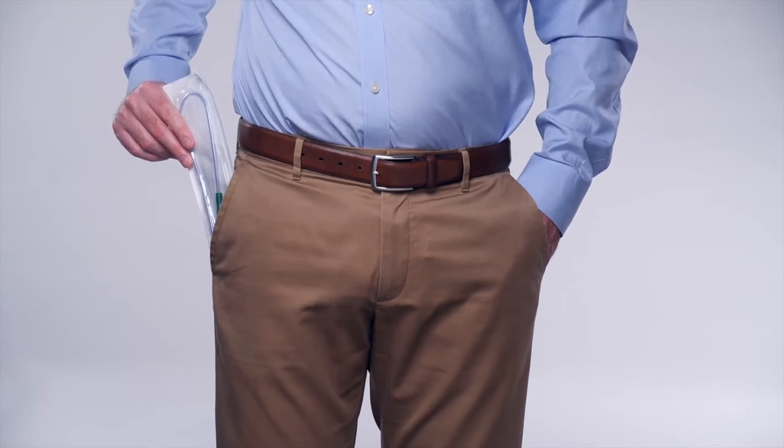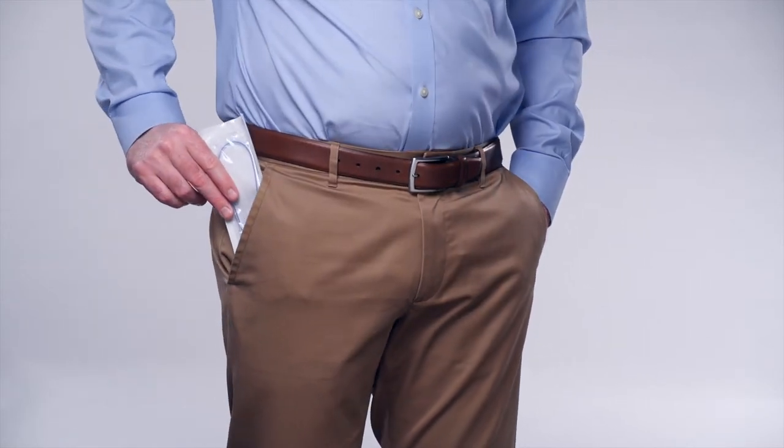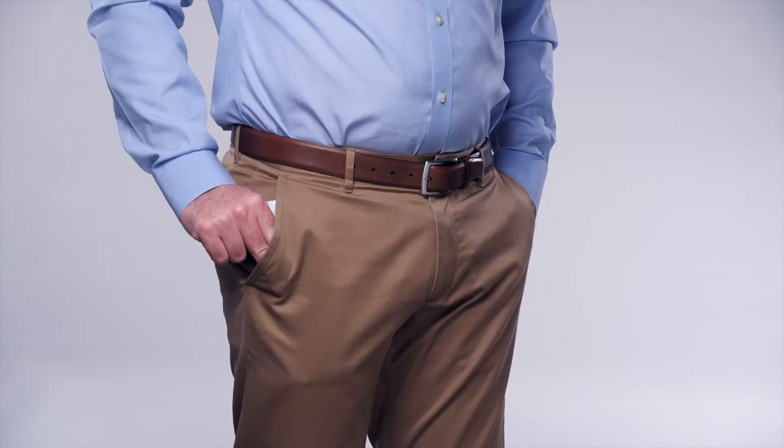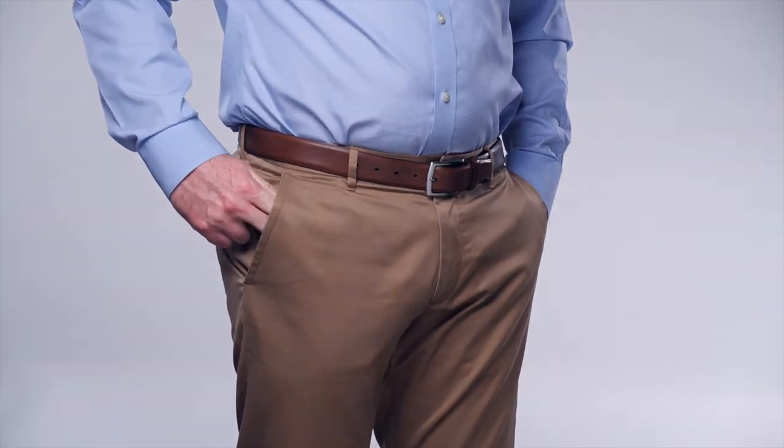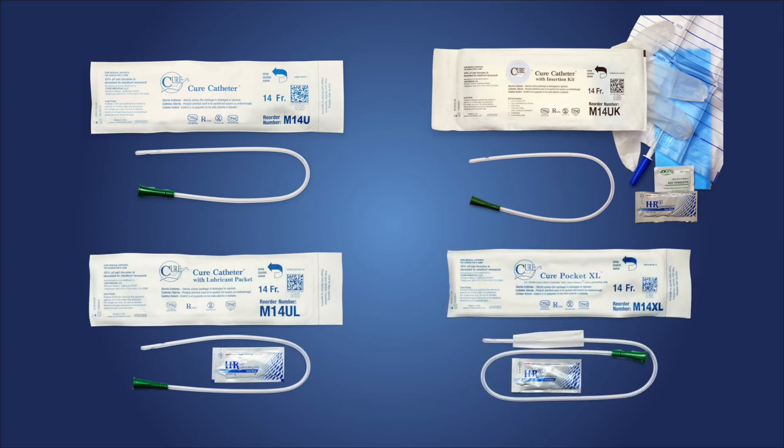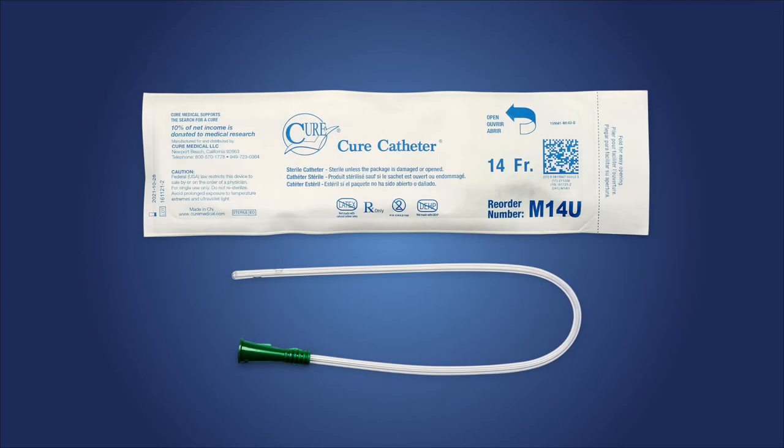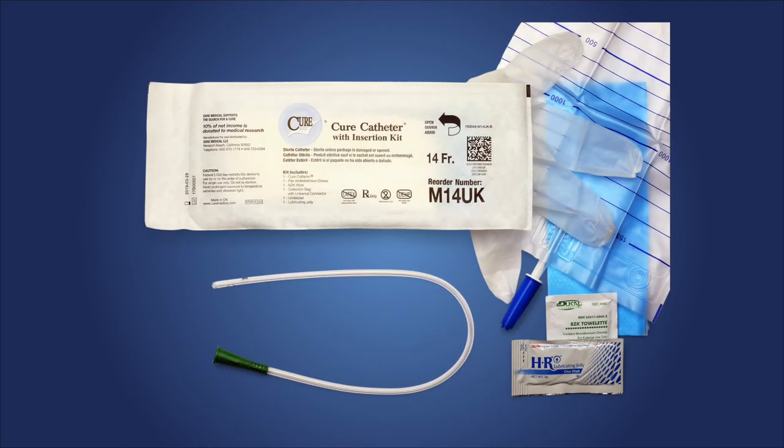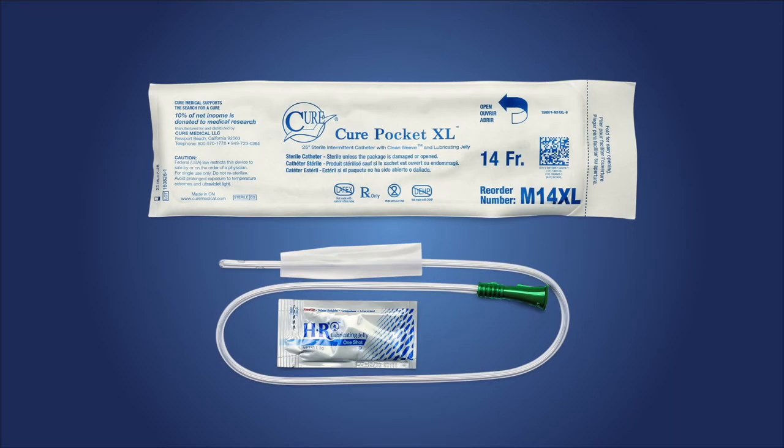The U-shaped Cure Medical pocket catheter fits in most pant pockets for discreet portability. The pocket catheter is available in multiple configurations to meet a variety of needs and preferences: singles, kits with insertion supplies, and an extra long 25-inch length.